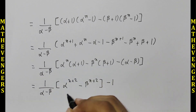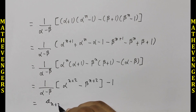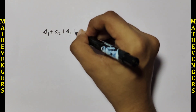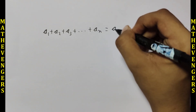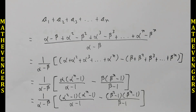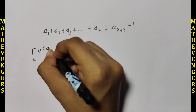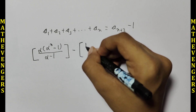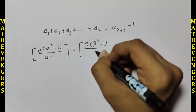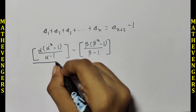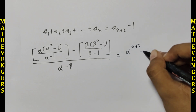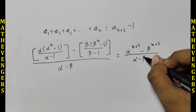We can see that this expression equals aₙ₊₂. So we get aₙ₊₂ - 1. Hence, we have proved that a₁ + a₂ + a₃ + ... + aₙ = aₙ₊₂ - 1. From here, this is also equal to [alpha(alphaⁿ - 1)/(alpha - 1) - beta(betaⁿ - 1)/(beta - 1)] / (alpha - beta) = (alphaⁿ⁺² - betaⁿ⁺²) / (alpha - beta) - 1.